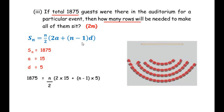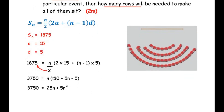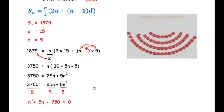Substituting the values: 1875 = (n/2) × (2 × 15 + (n − 1) × 5). Taking 2 to the other side: 1875 × 2 = 3750 = n × (30 + 5n − 5). Simplifying inside the bracket: 30 − 5 = 25, so 3750 = n × (25 + 5n). Expanding: 3750 = 25n + 5n². Since each term is divisible by 5, we divide through by 5.